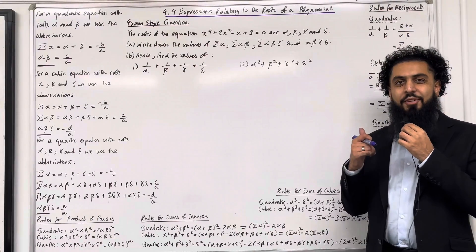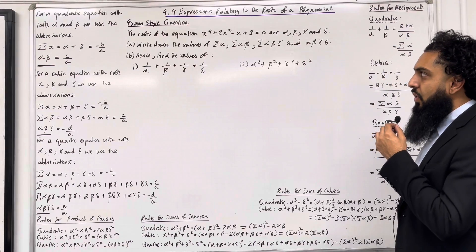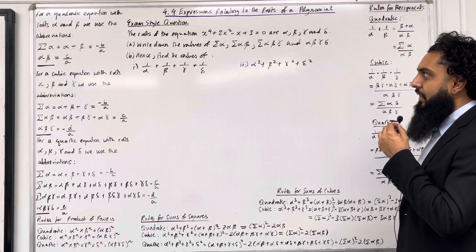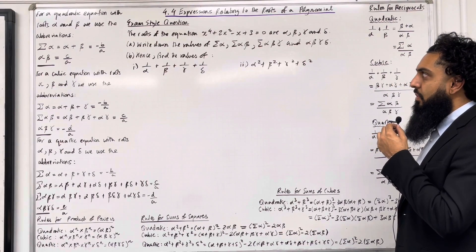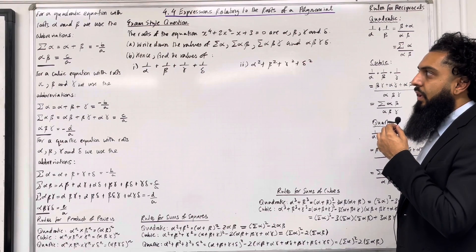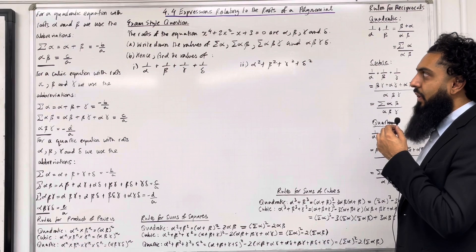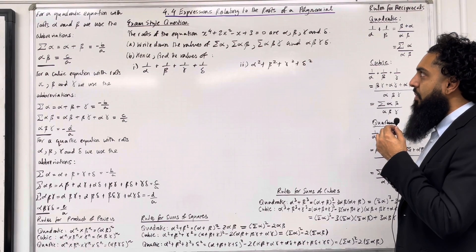Here is the next exam style question. The roots of the equation x to the power 4 plus 2x squared minus x plus 3 equals 0 are alpha, beta, gamma and delta. Part A: write down the values of sum of alpha, sum of alpha beta, sum of alpha beta gamma and alpha beta gamma delta.